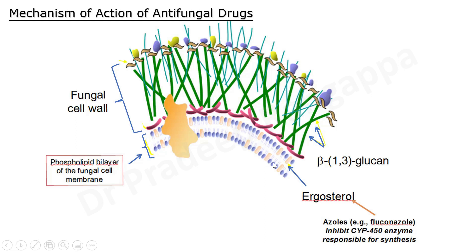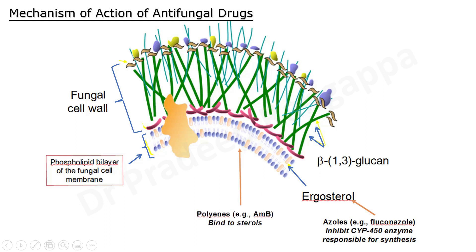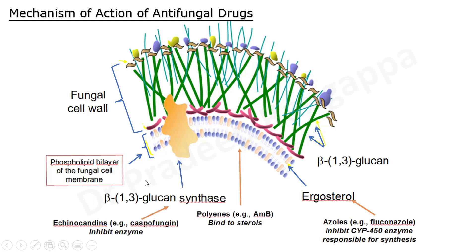The blue ones are the sterols. The polyenes — amphotericin B — act by binding to the sterols, and they help in inhibition of cell membrane formation. So amphotericin B, which belongs to the polyenes, acts by binding to sterols and inhibits cell membrane and cell wall synthesis. The echinocandins — anidulafungin, caspofungin, and micafungin — act by inhibiting the enzyme beta-1,3-glucan synthase, which leads to production of beta-1,3-glucan, a constituent of the cell wall. These, in brief, are the mechanisms of how these antifungal agents act.